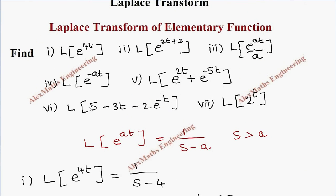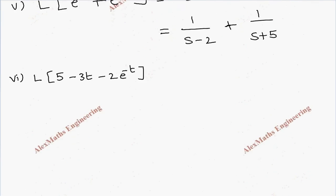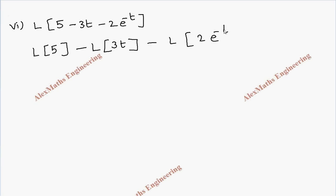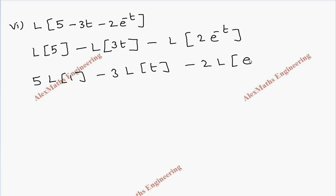For the sixth subdivision we have L{5 - 3t - 2e^(-t)}. We split this into three parts: L{5}, minus L{3t}, and minus L{2e^(-t)}. Taking constants outside: 5·L{1}, minus 3·L{t}, minus 2·L{e^(-t)}.